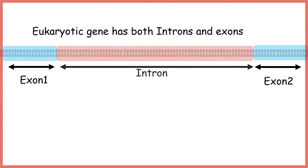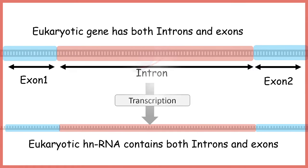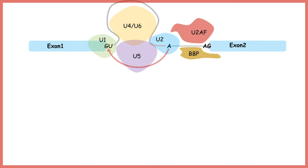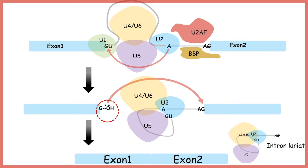Here is our eukaryotic gene, which has introns and exons. When transcription happens, an RNA is formed that also contains both exons and introns. The hnRNA is processed — even before transcription is complete — by the spliceosome machinery through two consecutive transesterification reactions, leading to splicing of the intron as a lariat and joining the exons together.